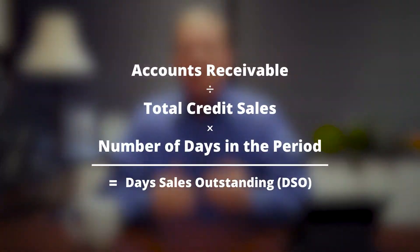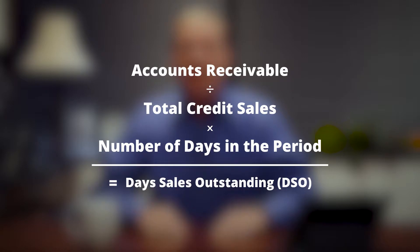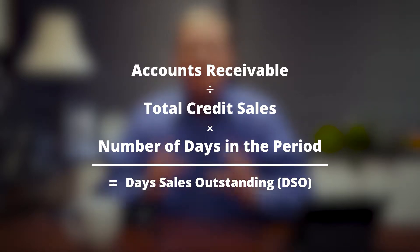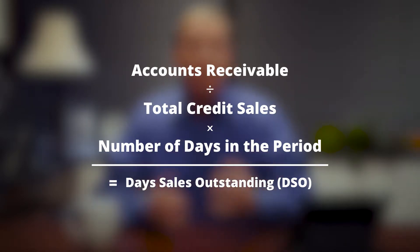The calculation is fairly straightforward: accounts receivable divided by total credit sales, times the number of days in the period. If you're reporting on 30 days of sales, then use 30 days as the period. If you use a year's worth of sales, use 365 days.